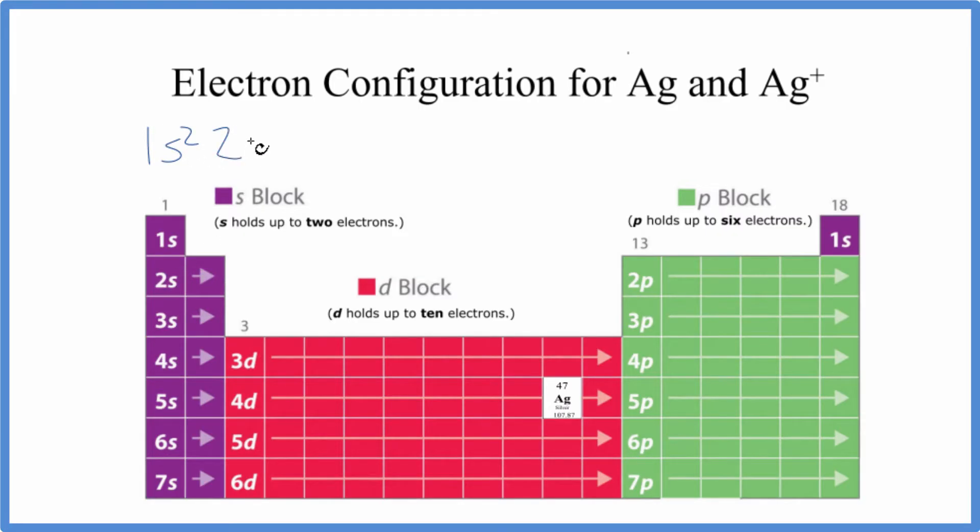We have 2s¹, 2s². That's full. We go to 2p: 1, 2, 3, 4, 5, 6. P holds up to 6, so we have 2p⁶. Let's stop for a second because where should we end based on this table?